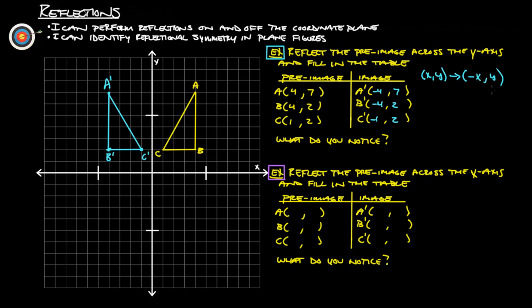That is what should happen every time we reflect across the Y-axis: all of our X's are going to switch from positive to negative, or negative to positive, and all the Y's are going to stay the same. Because the figure is still at the same height — so (1, 2) turns into (−1, 2).